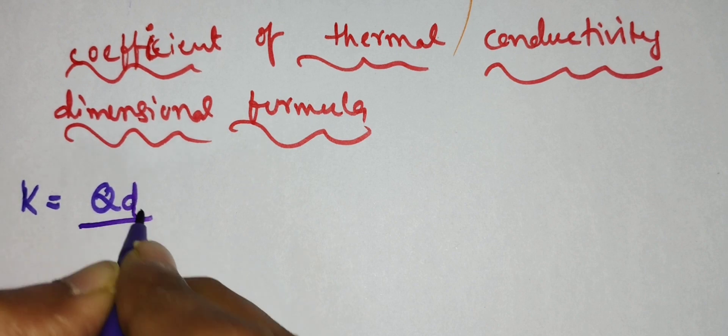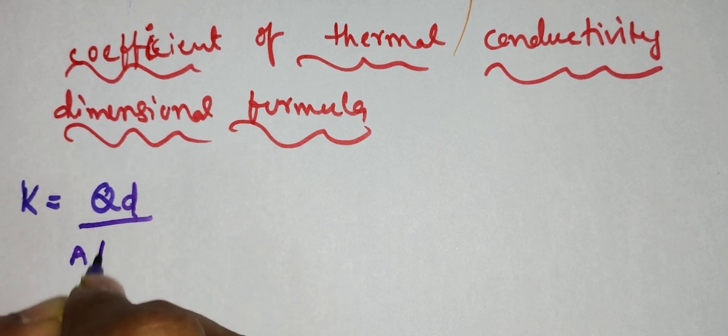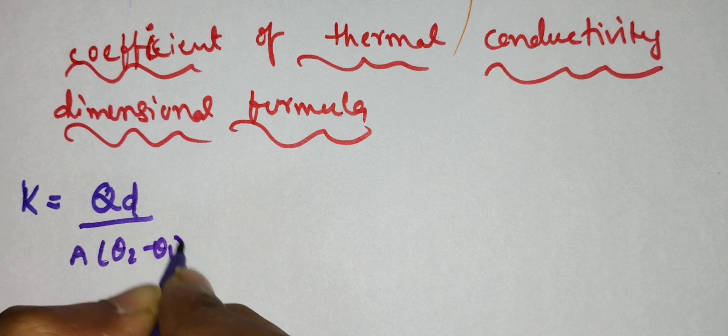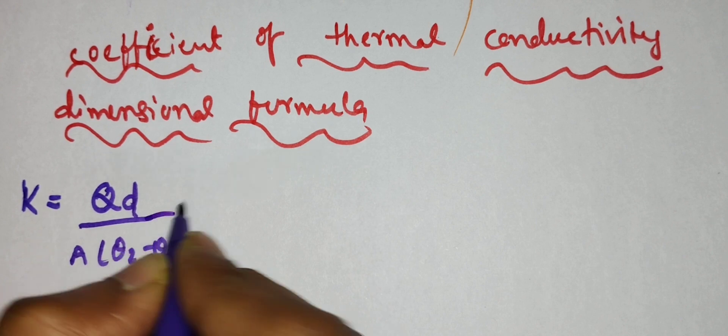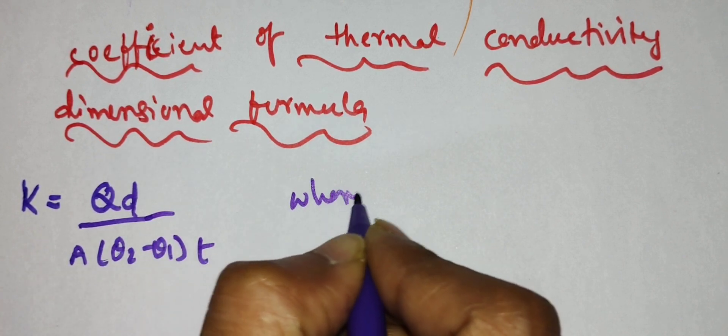Here it is: coefficient of thermal conductivity is equal to Q into D by A into theta 2 minus theta 1 into T. So this is the thermal conductivity dimension formula.